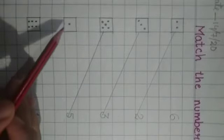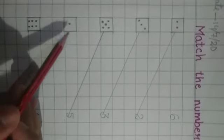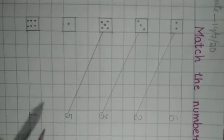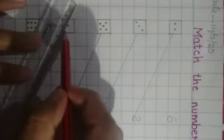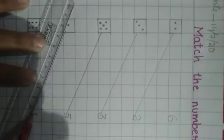Now here, only one dot is there. So we will match it with 1. Where 1 is written? Here. So we will match this box with number 1.